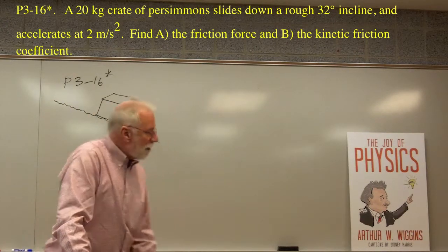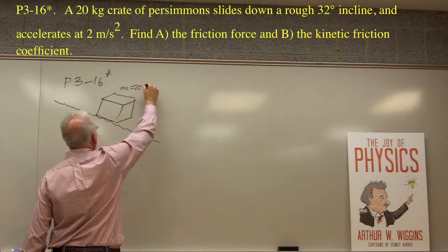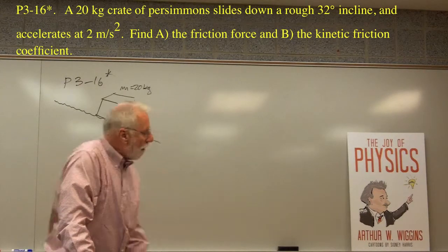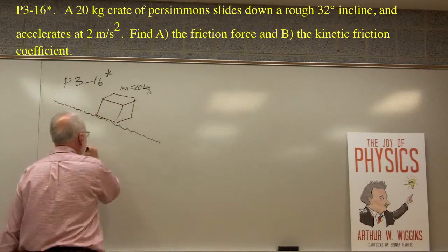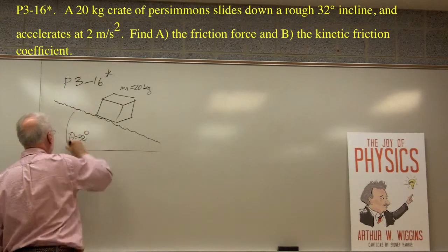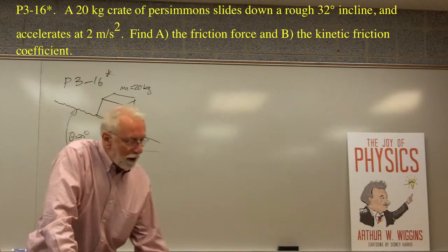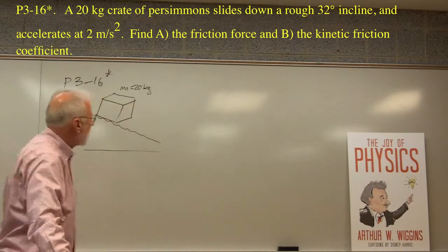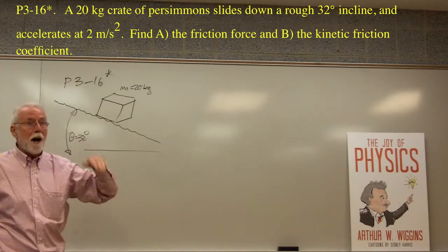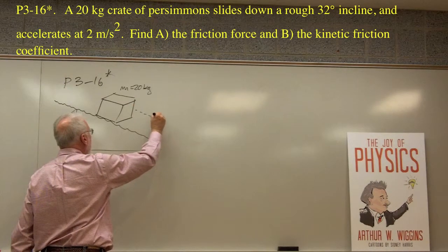The crate has a mass of 20 kilograms. The incline is 32 degrees, so here's theta — 32 degrees. It also tells us the crate accelerates at 2 meters per second squared, and it's going to accelerate down the plane, because things slide down.